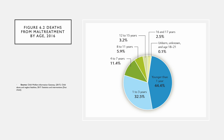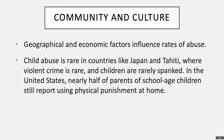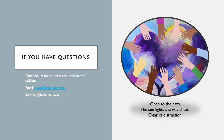Some risk factors for maltreatment include marital problems, stressful events like getting laid off, lack of parental education, poverty, substance abuse, and depression. Geographical and economic factors influence the rate of abuse. Child abuse is rare in countries like Japan and Tahiti, where violent crime is rare and children are rarely spanked. In the United States, nearly half of parents of school-age children still report using physical punishment at home. Thank you for paying attention to this lecture. If you have any questions, you can join me for office hours or email me your questions.